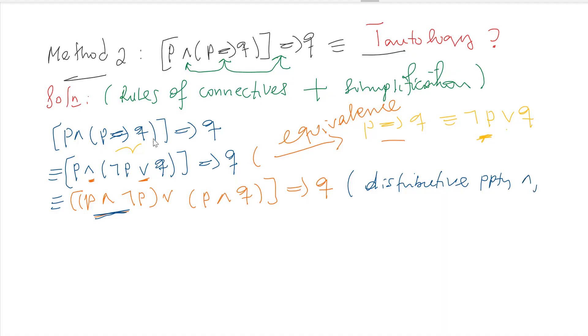This is distributive property of disjunction over conjunction. Next line, p and its negation, a statement with its negation combined by a conjunction is always false. So this directly reduced to false or [p ∧ q] then close the bracket implies q.